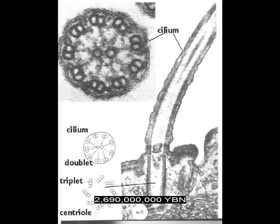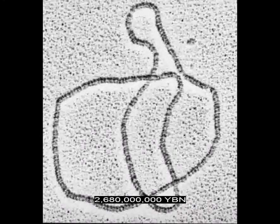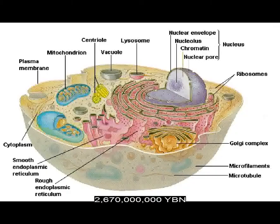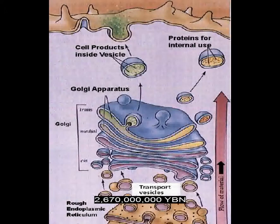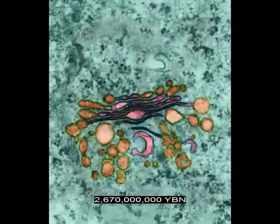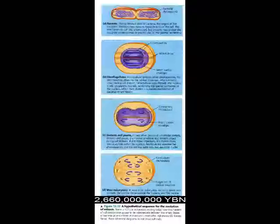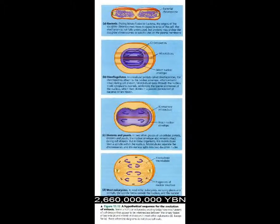The eukaryote flagellum and cilia evolve. The circular chromosome in the eukaryote nucleus changes into linear chromosomes. The eukaryote Golgi apparatus evolves, packaging proteins and lipids into vesicles for delivery to targeted destinations. The nucleolus evolves — a sphere in the nucleus that makes ribosomes. Mitosis evolves in eukaryote cells: the process in which duplicated chromosomes are separated and the nucleus divides, resulting in two new nuclei each containing an identical copy of the parental chromosomes. Mitosis is usually immediately followed by division of the cytoplasm.